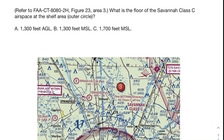In this video about sectional charts, we are going to be talking about floors and ceilings of airspaces. This is a super important topic. You have to be able to look at numbers on the sectional chart and figure out what that means in terms of the floor and the ceiling of that airspace, along with knowing what AGL and MSL are. So let's go ahead and dive into this first practice problem.